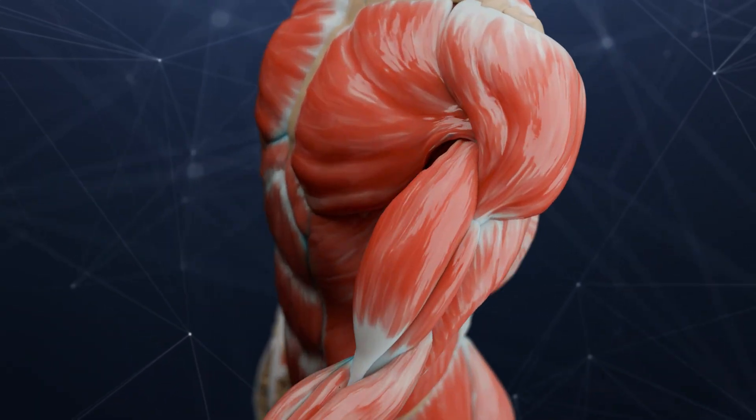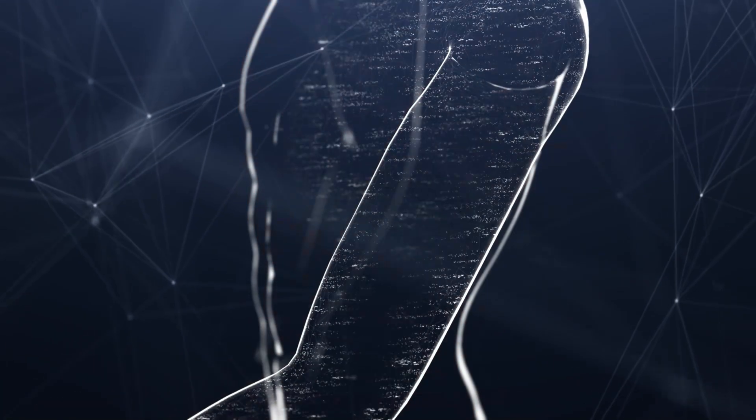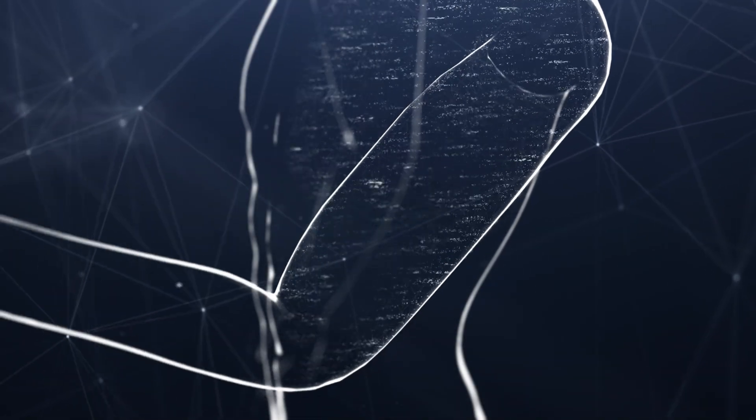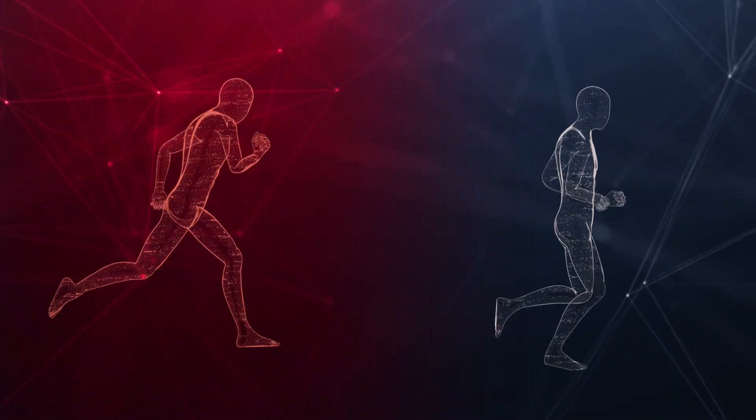Human muscles are surprisingly inefficient. Depending on activity type, anywhere from 75 to 80% of the calories we burn results in waste heat that must be dissipated. The more intense the physical activity, the more our metabolic rate, or our calories burned, goes up.